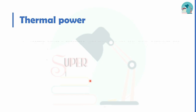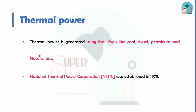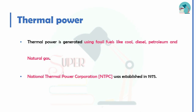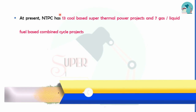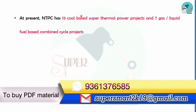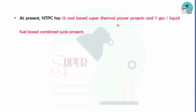First, we have thermal power. Thermal power is generated by fossil fuels — coal, diesel, petroleum, and natural gas. The National Thermal Power Corporation was established in 1975. And now we have 13 coal-based super thermal power projects and 7 gas and liquid fuel-based combined cycle projects.